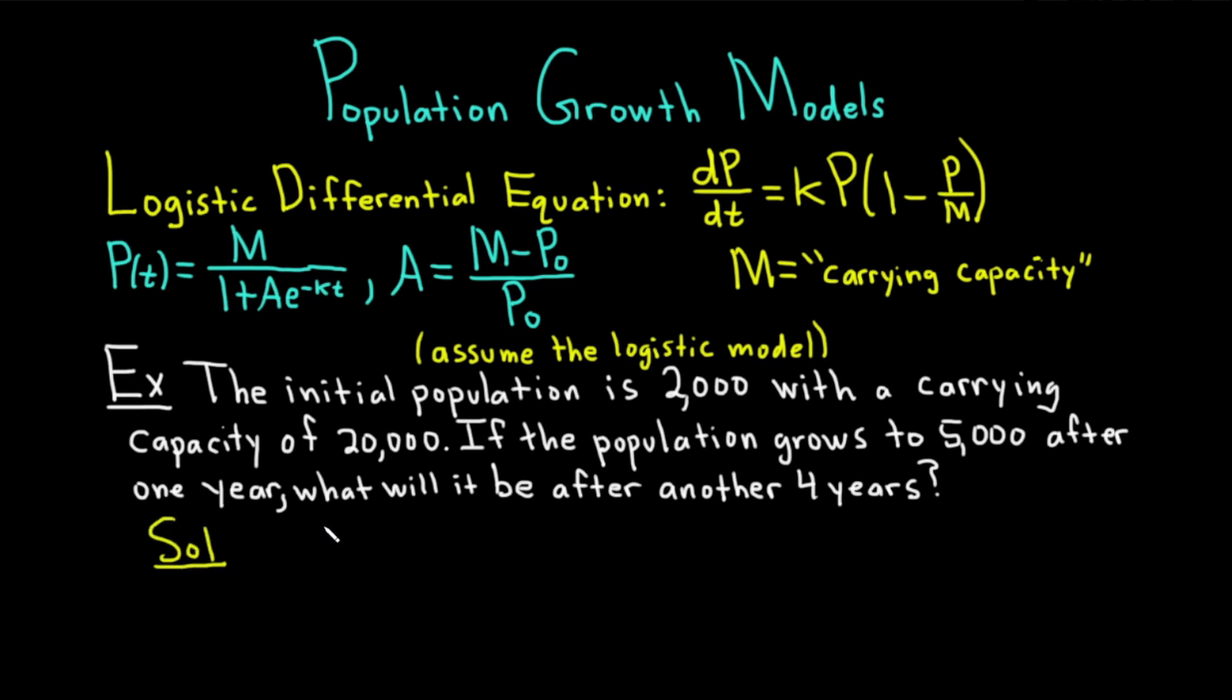Let's work through this solution carefully. We'll start by writing down what we're given. The initial population is 2,000, so P₀ equals 2,000. We're also told that the carrying capacity is 20,000, so M equals 20,000.